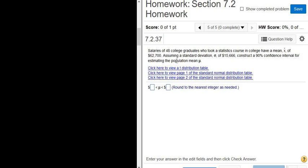Let's read through it carefully. Salaries of 48 college graduates, that's the sample size, so n equals 48, who took a statistics course in college, have a mean x-bar of $62,700. Assuming a standard deviation sigma of 15,666.